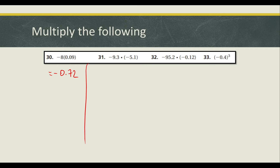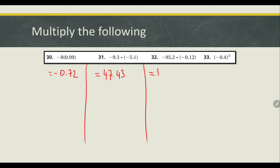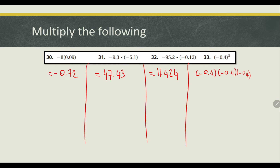For question 31, I'm going to use a calculator to save time: 9.3 times 5.1 gives us positive 47.43. For question 32, also using a calculator, the answer is positive 11.424. For question 33, we have negative 0.4 times negative 0.4 times negative 0.4. Multiplying three negatives gives a negative answer, so we get negative 0.064.